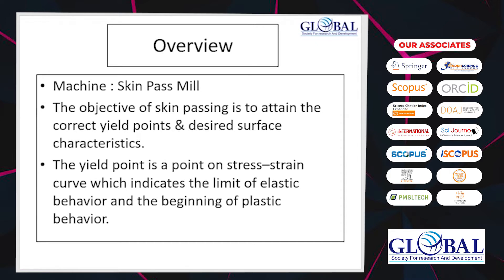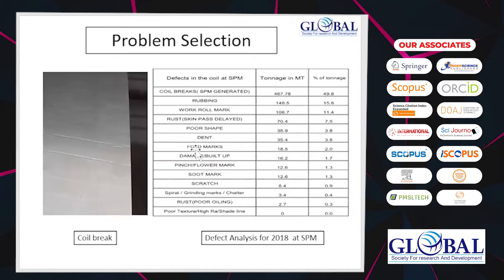So, the yield point is a point on the stress-strain curve which indicates the limit of elastic behavior and the beginning of plastic behavior. For selecting the problem, we have selected the skin pass mill machine.